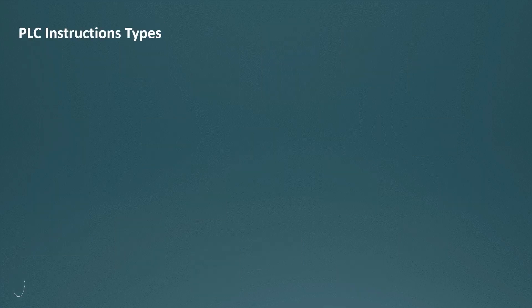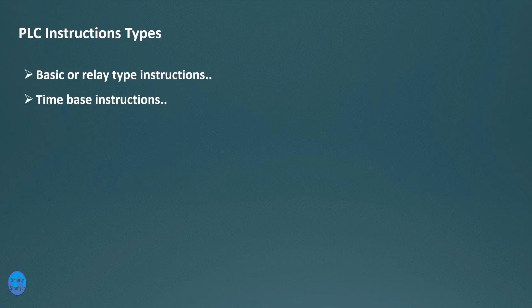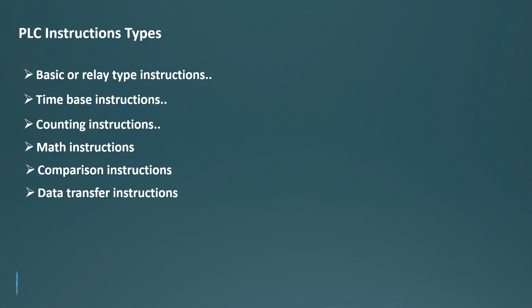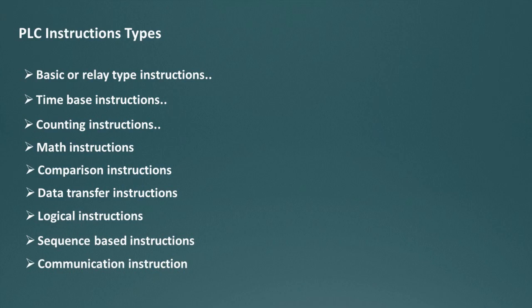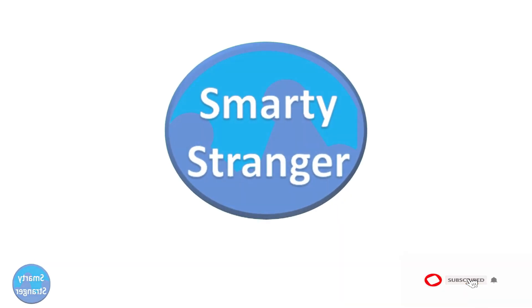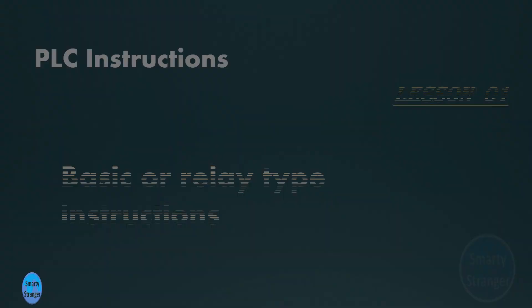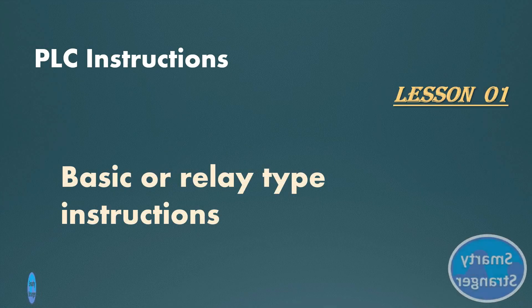There are 100-plus instructions available in PLC programming. If we categorize them, the commonly used ones are: basic or relay-type instructions, timer-based instructions, counting instructions, math instructions, comparison instructions, data transfer instructions, logical instructions, sequence-based instructions, and communication instructions. In this video we will try to understand the most important and most commonly used instructions.